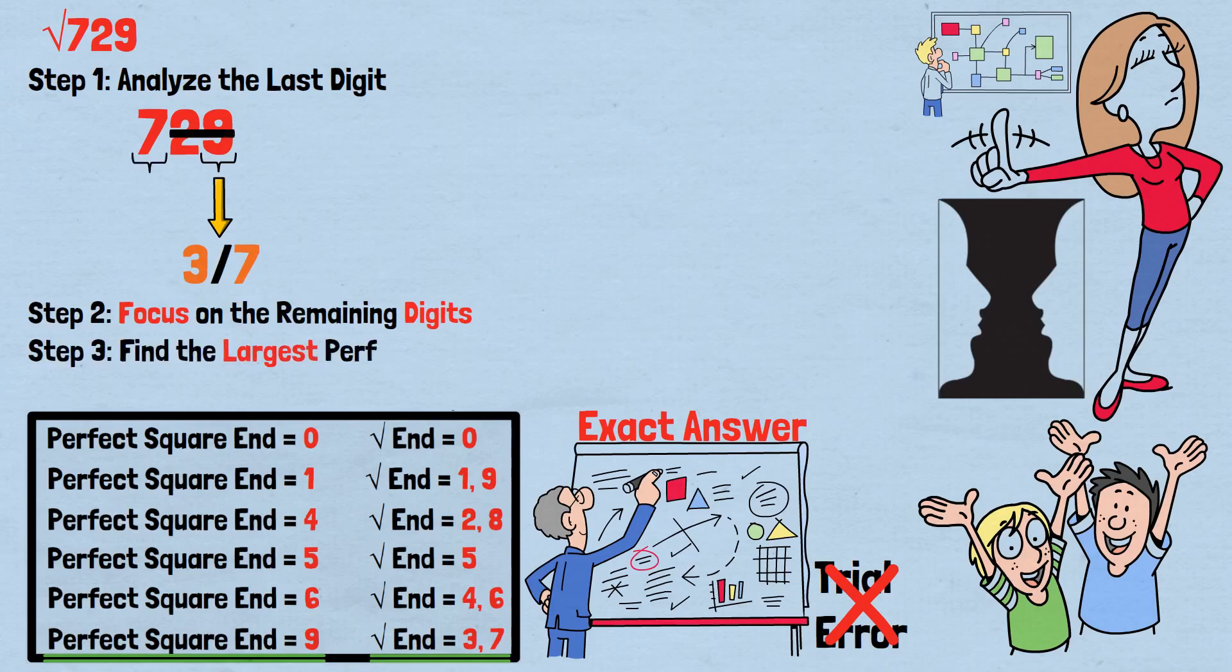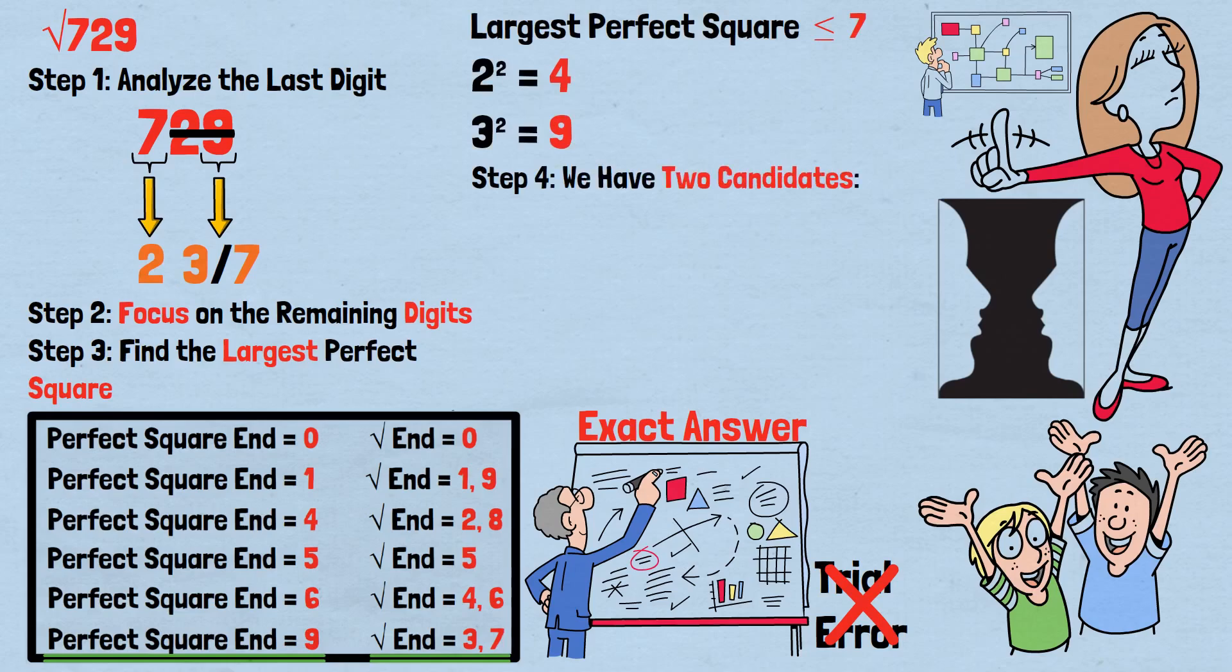Step 3: Find the largest perfect square. The largest perfect square that doesn't exceed 7 is 4, which equals 2 squared. So our first digit is 2. Step 4: We have two candidates. Our potential answers are 23 and 27.